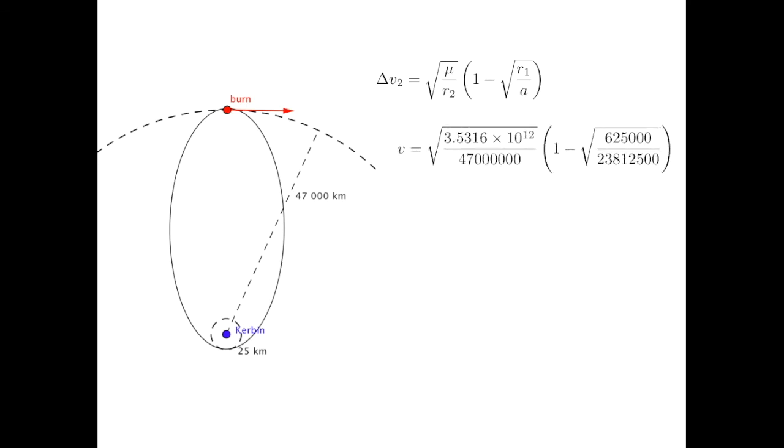Substituting in, I want to draw attention to two things. One, I'm now using the gravitational parameter for Kerbin. And two, the higher orbit is the radius measured from Kerbin's center, while the lower altitude is measured from Kerbin's surface, so I have to add on Kerbin's 600 kilometer radius. Punching through a calculator gets 230 meters per second. Note that I don't have to worry about the burn down at periapsis. Kerbin's atmosphere took care of that.